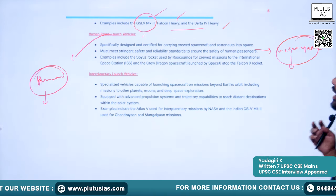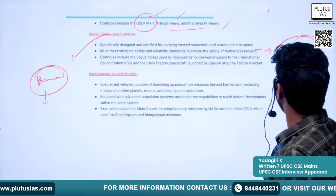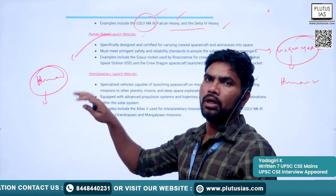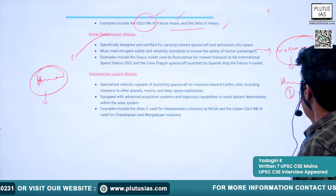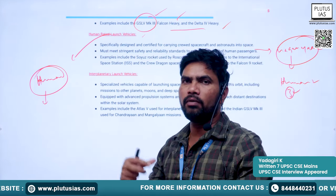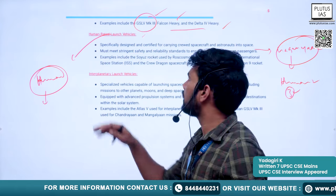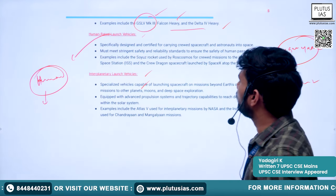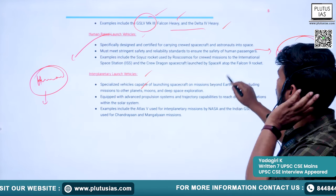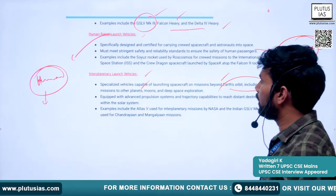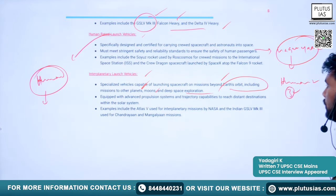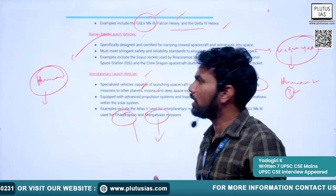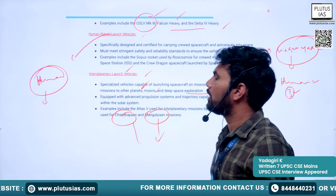The best example of a human-rated launch vehicle is our ambitious Gaganyaan program. The vehicle used will carry a crew module into the desired orbit. Interplanetary launch vehicles are specialized vehicles capable of launching spacecraft on missions beyond earth's orbit, including missions to other planets, moons, and deep space. The vehicles used for Chandrayaan and Mangalyaan fall under this category.